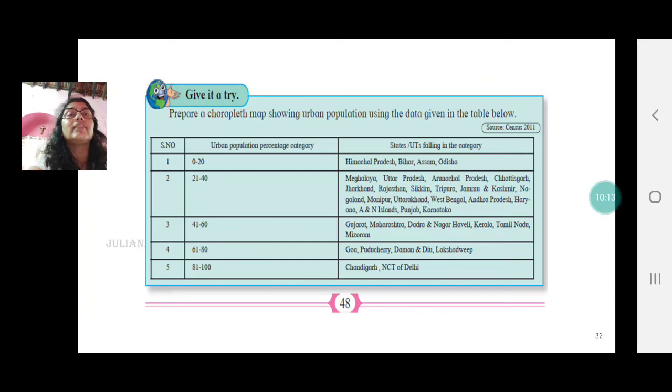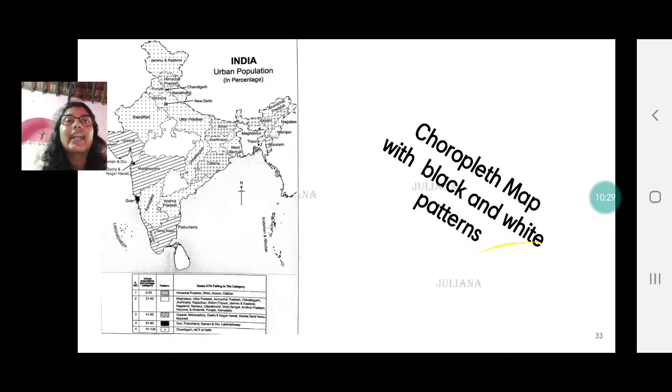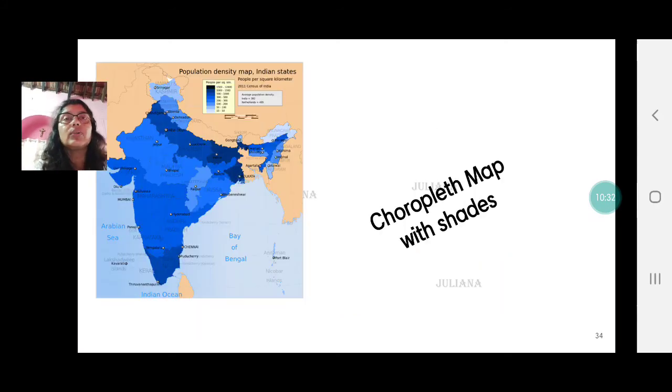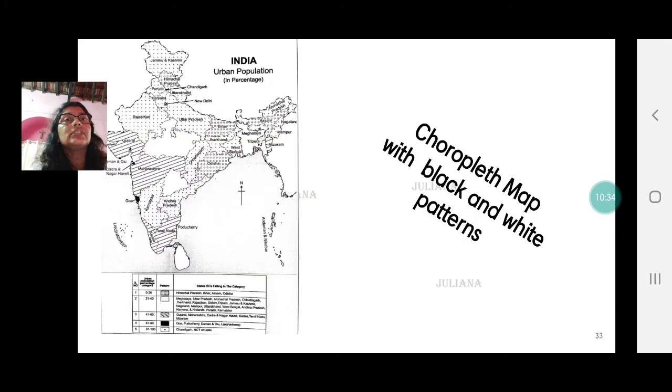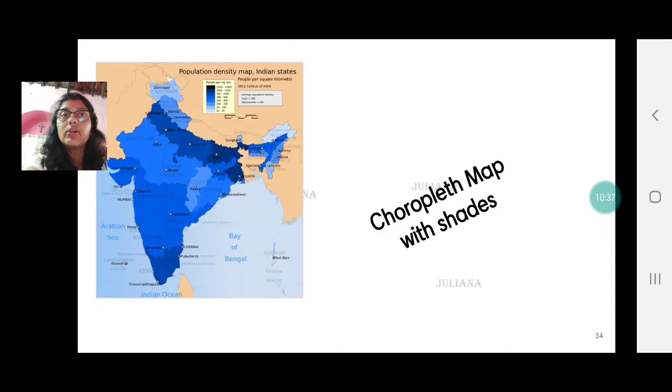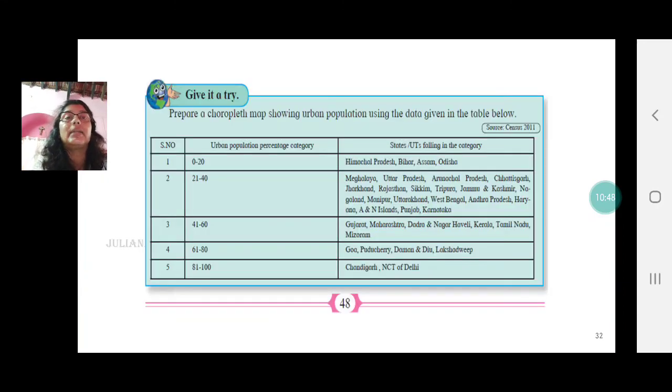Then on page 48 you have an activity. Try it yourself. Prepare a choropleth map showing urban population using the data given in the table below. Now in the ninth standard we know choropleth method can be drawn in two ways. One is through black and white patterns or through color shading. I would advise you to stick to black and white patterns because while shading in case the shade tint does not match with your index you can lose marks. So there are two ways of preparing but I would prefer this method.